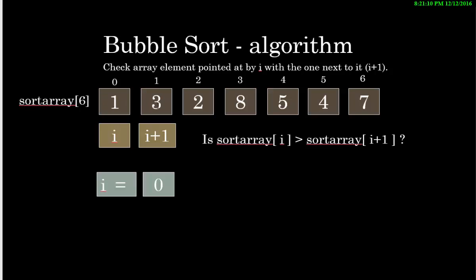Starting off with the sort array, 0 to 6. Some items are in order and some are not.